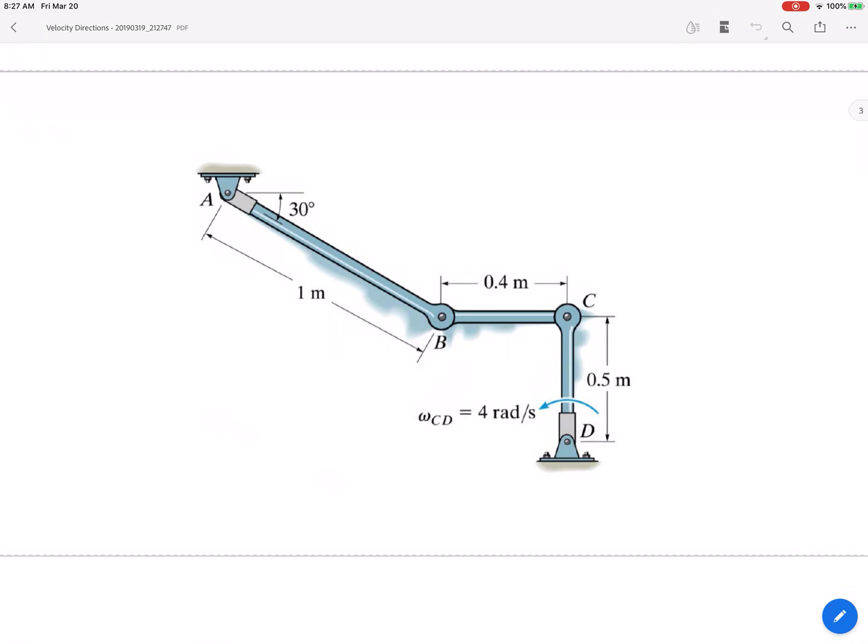I'm going to do vB equals vC plus vB slash C, alright? But before I get there I need to go ahead and find the velocity of C. Do you see that the velocity of C would be perfectly to the left right there?